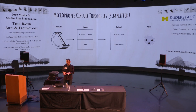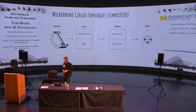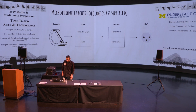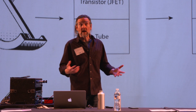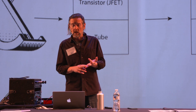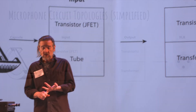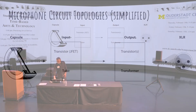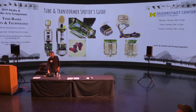There are different ways to build condenser microphone circuits, and we'll go into just a couple of them here. There's an input and an output. The input can be a transistor or a tube, and the output can be transistors or have a transformer. You can have tubes on both ends, or tubes in the front and transistors in the back — there are all kinds of ways to combine these things. For our purposes, we're just going to look at some of the highlights because they affect the kind of sound we're going to get.